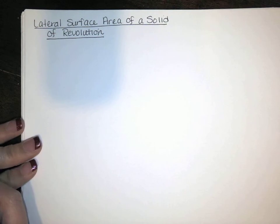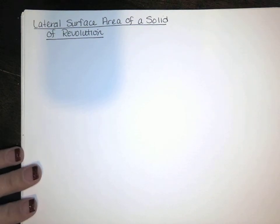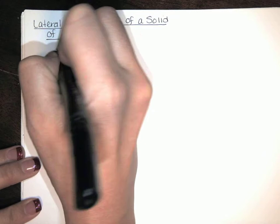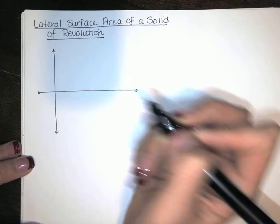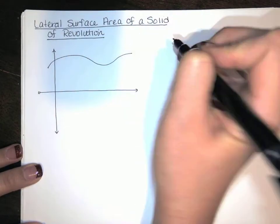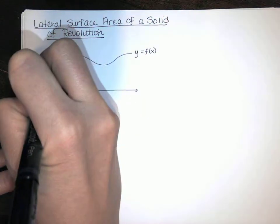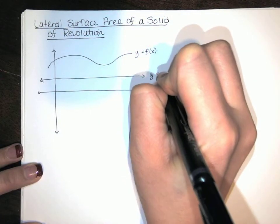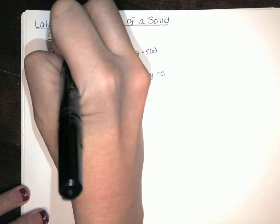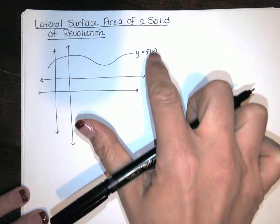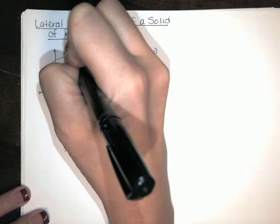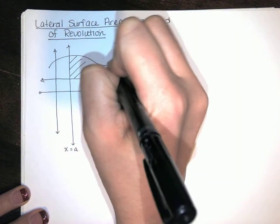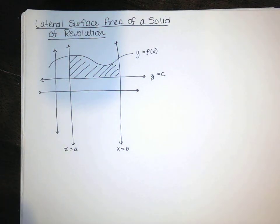In this section we're doing pretty much the same thing. If I want to find the surface area of a solid of revolution, I need to break it up into n pieces and find the surface area for one piece. Let's say we have y equals f(x) up here and a horizontal line y equals c down here, and I'm interested in the region between y = f(x) and y = c, between the vertical lines x = a and x = b.